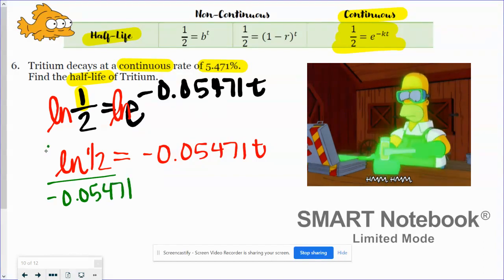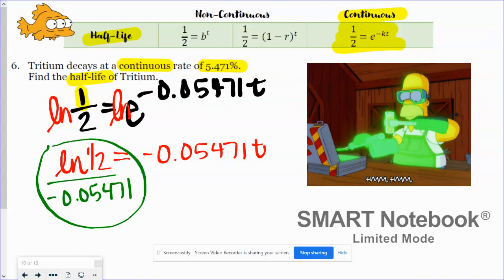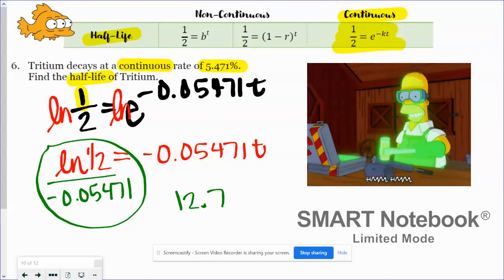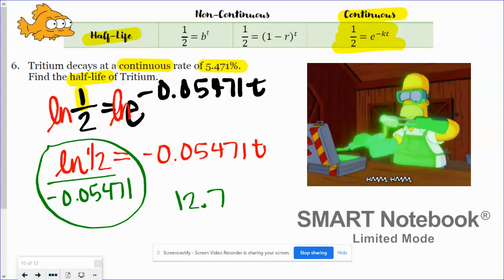And so this is what I'm calculating. And I got like 12.7. I don't know exactly what the unit is, but 12.7 time units, whatever the time units are. But it was a half-life problem. It was a continuous problem. So I knew I was using my one half equals e to the negative kt power formula.